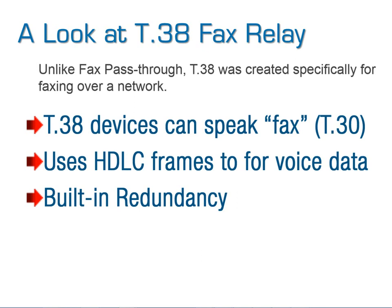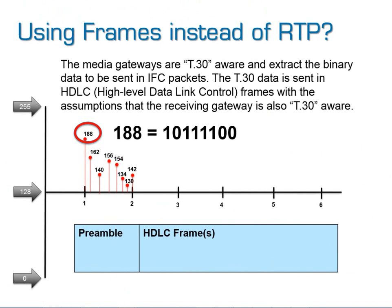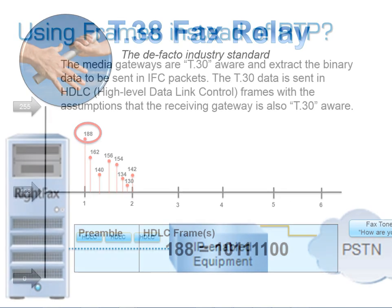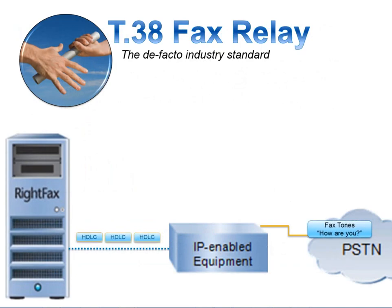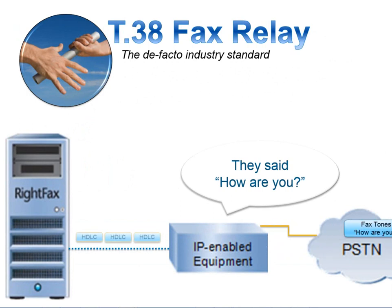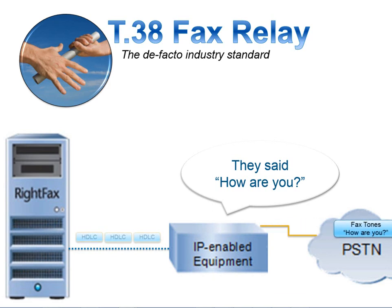T38 has built-in redundancy features. The frames capture the same hexadecimal information and send it in HDLC frames — much smaller because they don't carry entire audio samples. When T38 receives fax tones into IP-enabled equipment, it relays the information to the fax server as simple HDLC frames explaining exactly what the tones were, not complete audio recordings. This makes it easy to repeat those packets if they're lost.